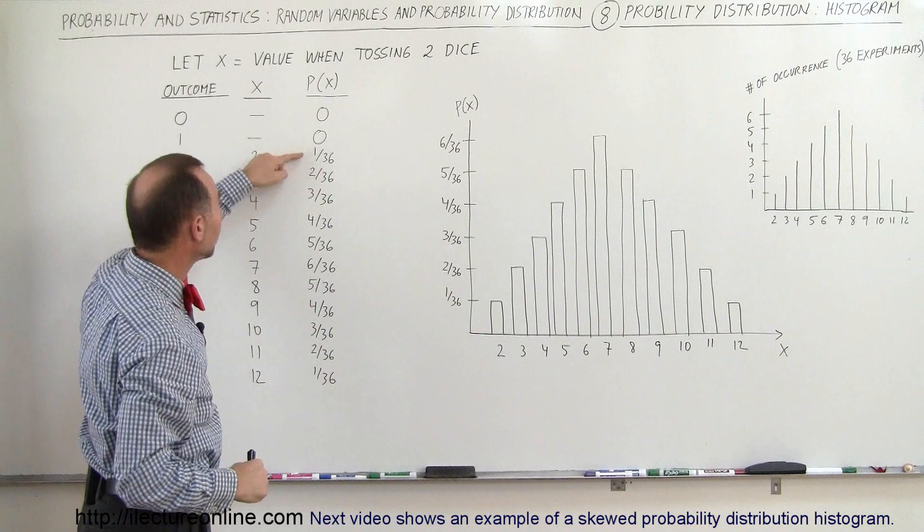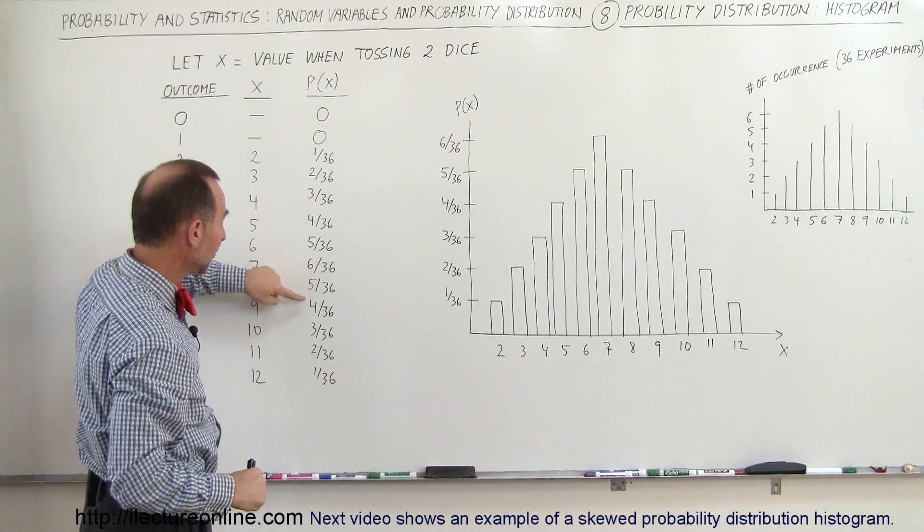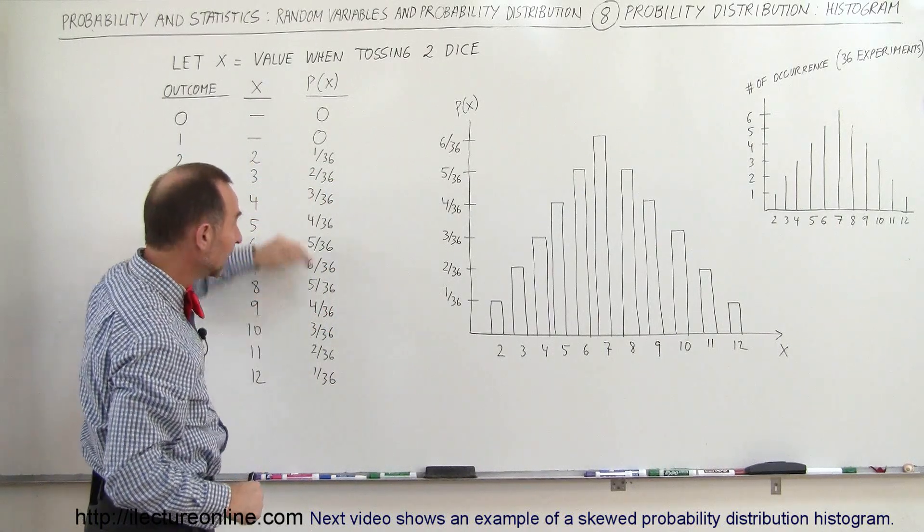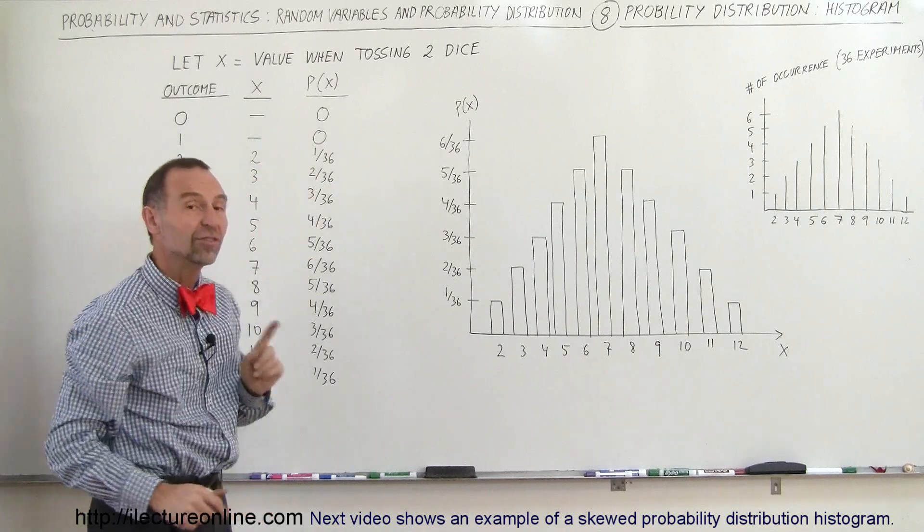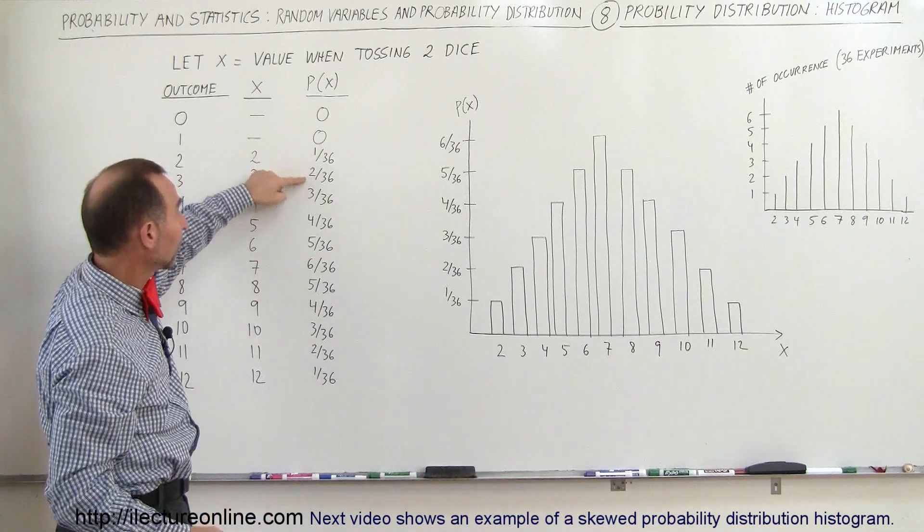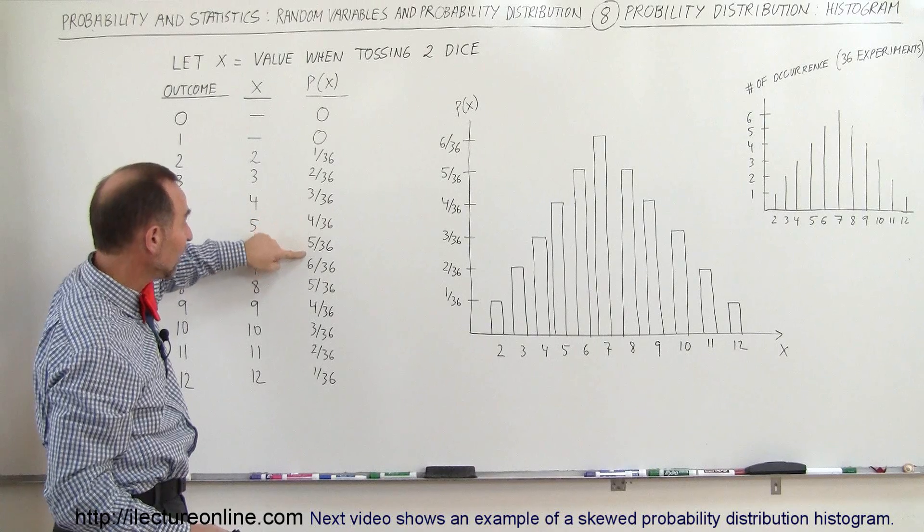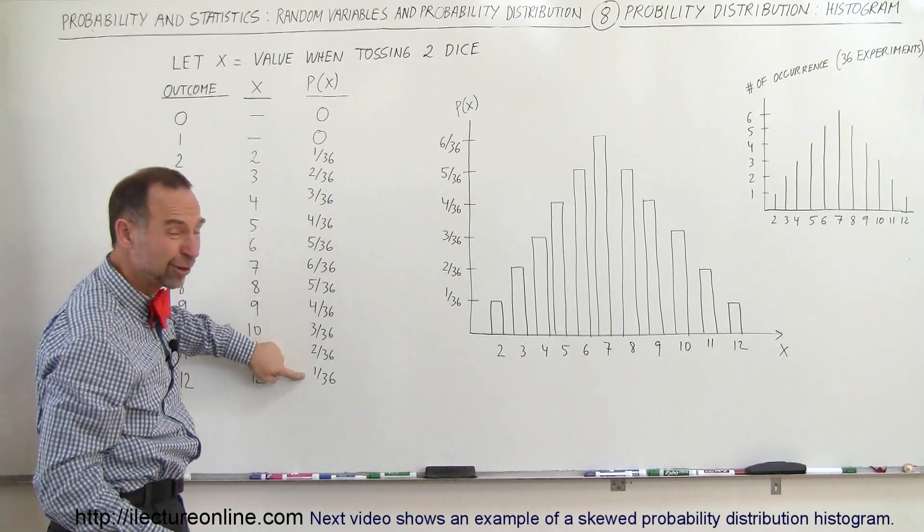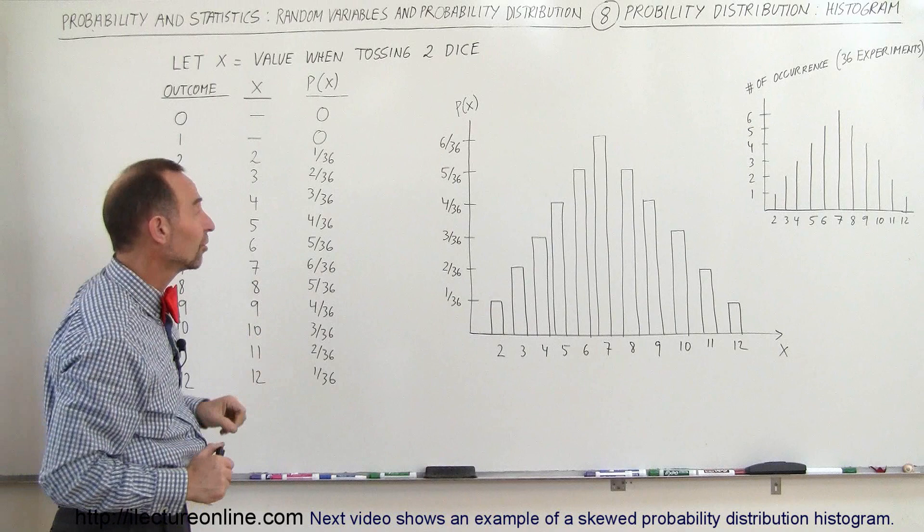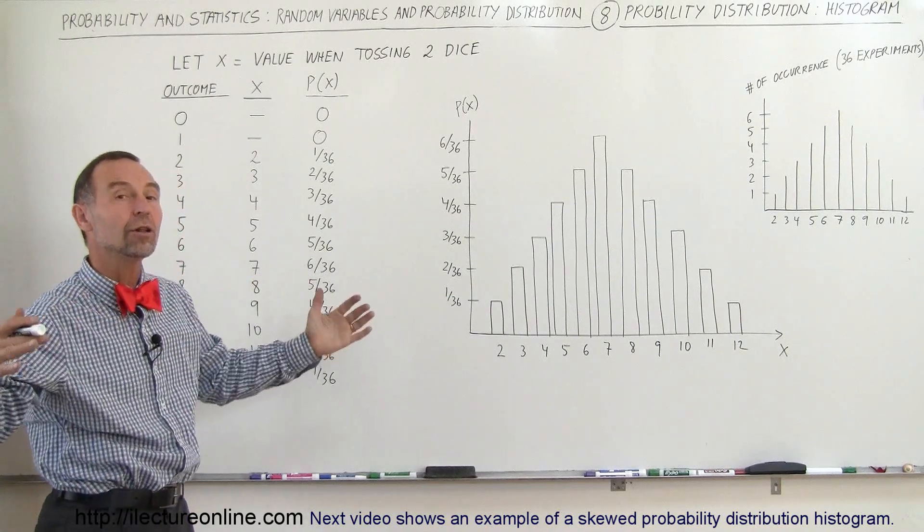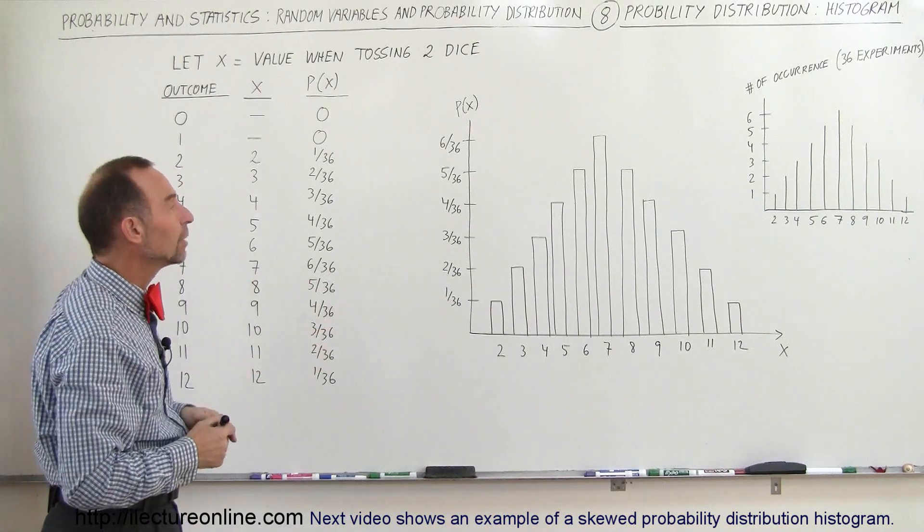So if you add up 1 plus 2 plus 3 plus 4 plus 5 plus 6 plus 5 plus 4 plus 3 plus 2 plus 1, that should add all up to 36. And let's check it, that's 3, that's 6, that's 10, 15, 21, 26, 30, 33, 35, 36. They do indeed add up to 36, which is the probability of all of them occurring, total would be equal to 1.